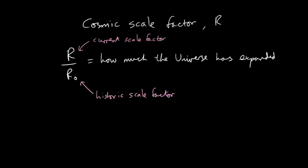So how does the scale factor relate to redshift? Well, they're related by the equation Z equals R divided by R0 minus 1. So in that previous example where R divided by R0 equals 5, that would give us a redshift of 4.